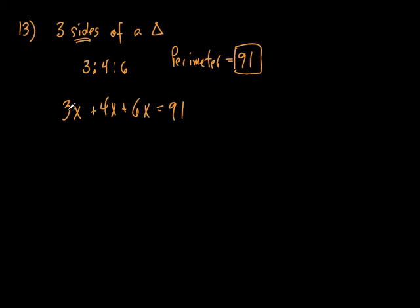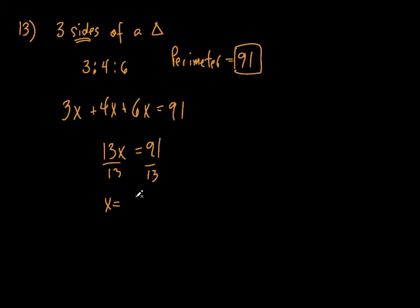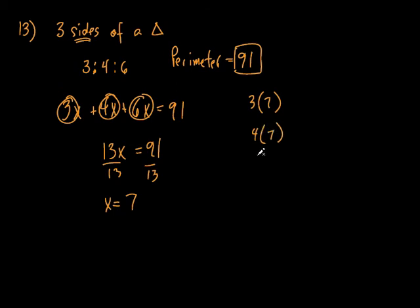Let's continue with this problem. Let's just add them up: 3 and 4 is 7, and 6 is 13. So 13x equals 91. Divide both sides by 13, and x equals 7. But is that my answer? If they say find the length of all three sides, then x=7 means the sides are 3×7, 4×7, and 6×7 — that's 21, 28, and 42.